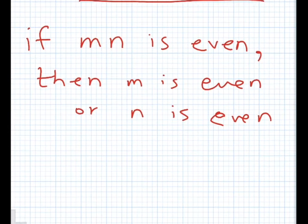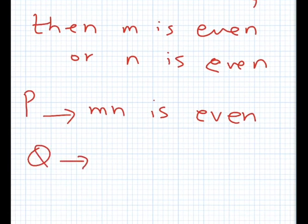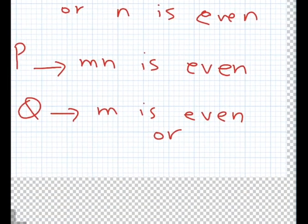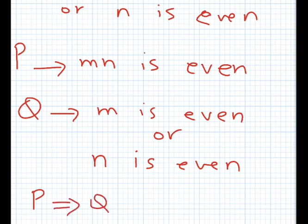Now note that if we compare it to our main statement, our P is m times n is even, and our Q is m is even or n is even. If we want to prove the direct way, which is P implies Q, then Q has three options.